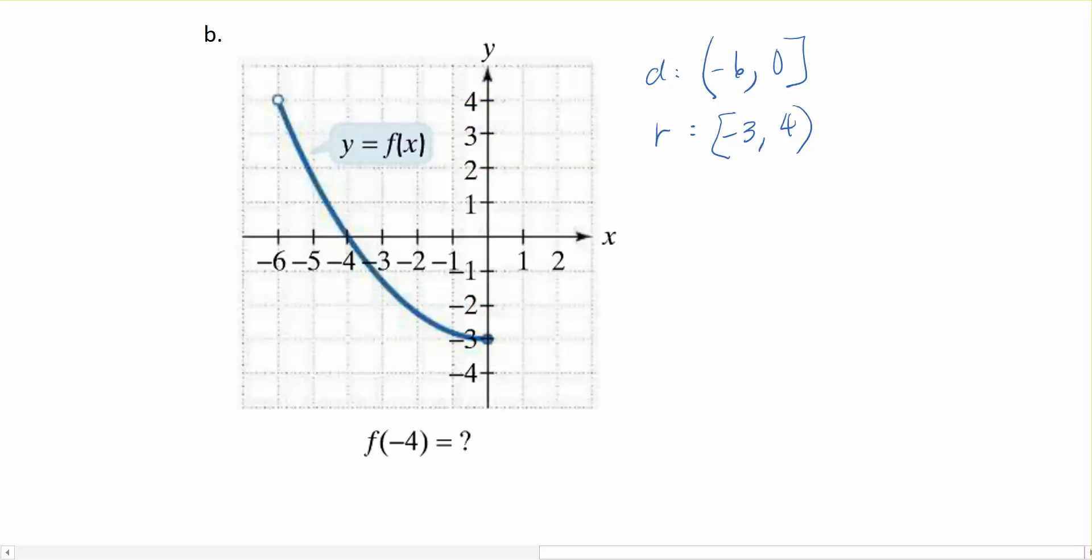Now let's address intercepts. Where does my function cross the x axis? Well, that's occurring over here at the ordered pair negative 4, 0. And for my y intercept, that occurs down here at 0, negative 3. Notice that when I have domains and ranges, I use brackets and parentheses to imply an interval. But here, this is an ordered pair, which gives me an exact location of a point.